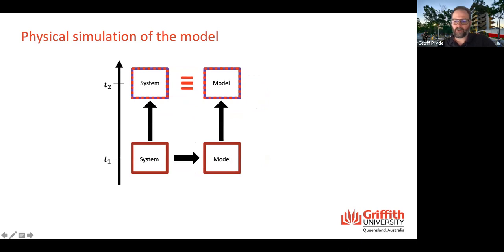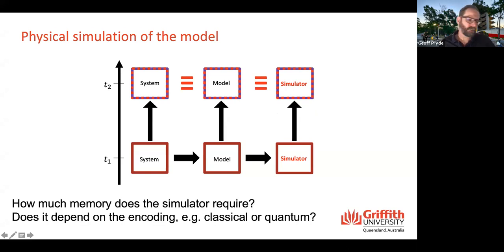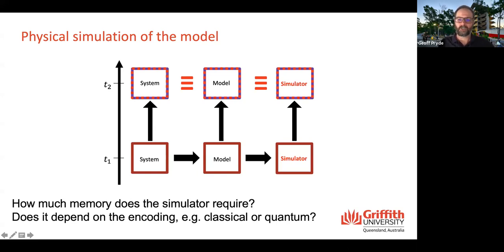We can take that even further because a model is a mathematical construct. In order to implement that model, we need some sort of physical simulator — some platform on which we can run the model to produce the output. We want the output of that simulator to be equivalent to that of the underlying system. The question we ask in these memory and statistical complexity questions is: how much memory does the simulator require? And here's the key question — does it depend on the encoding? That is to say, whether a simulator has classical memory or quantum memory. You can probably already guess that the answer is yes, it does depend on the type of memory.